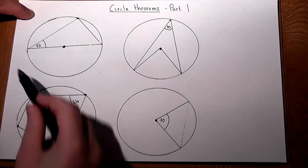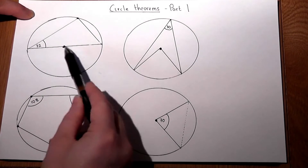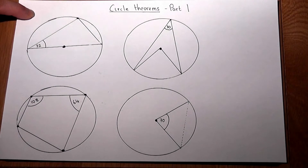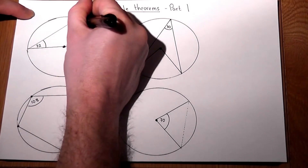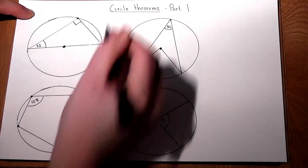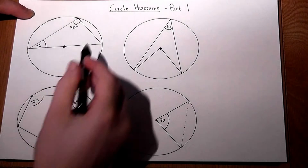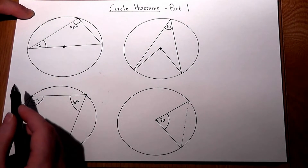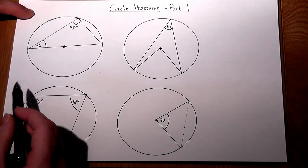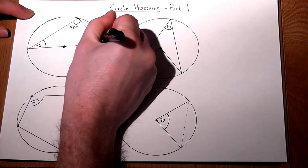Suppose you've got a triangle which is formed by a diameter passing through the center of the circle — then the angle at the circumference is always a right angle, i.e. 90 degrees. So we can therefore find a missing angle because the angles add up to 180, so 180 take away 90, take away 32, gives us 58 degrees.